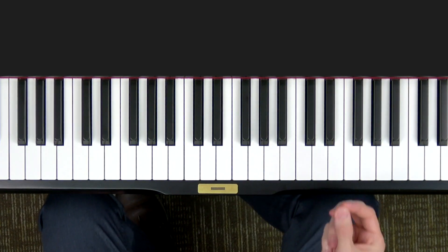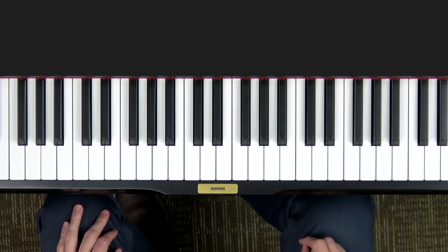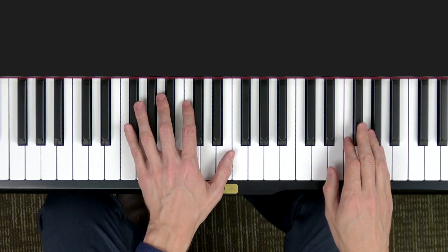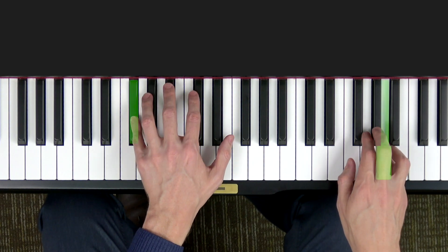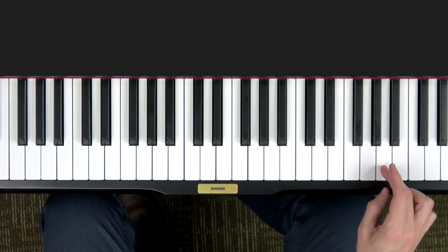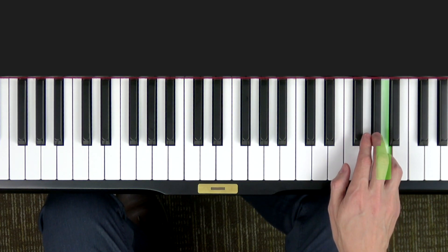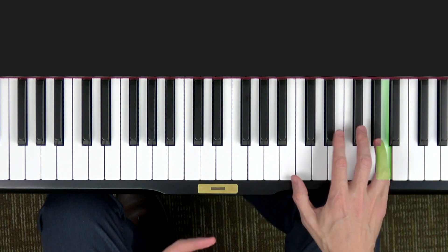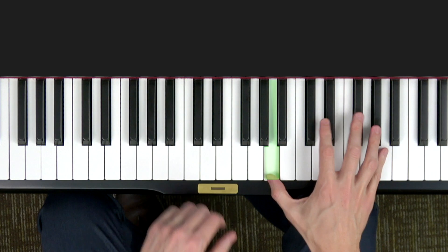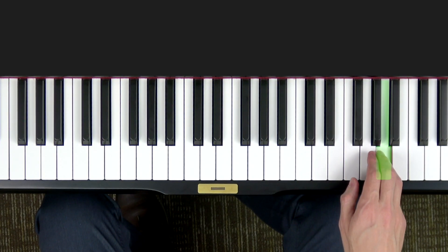Lots of composers have used that since Beethoven first wrote Fur Elise, like the composer Yiruma recently in River Flows in You. Notice that use of a minor second between this A and the G-sharp also creates a really sweet sound. Just see how beautiful and sweet that minor second can be.